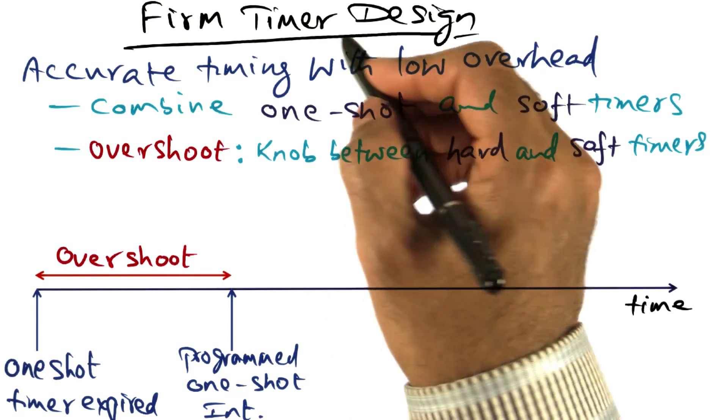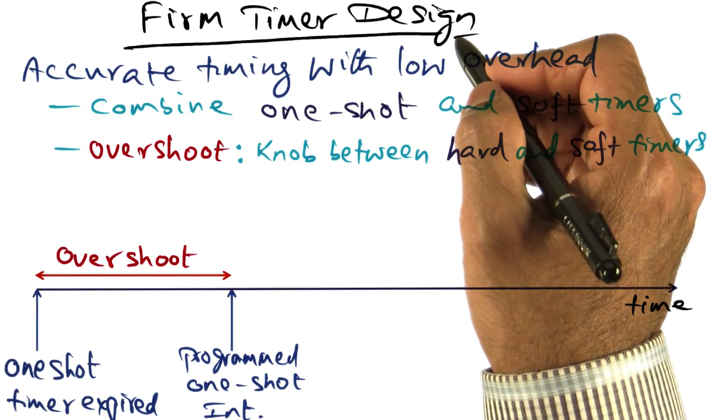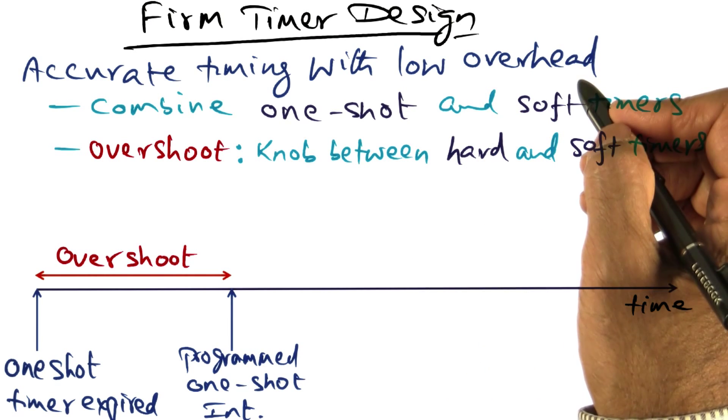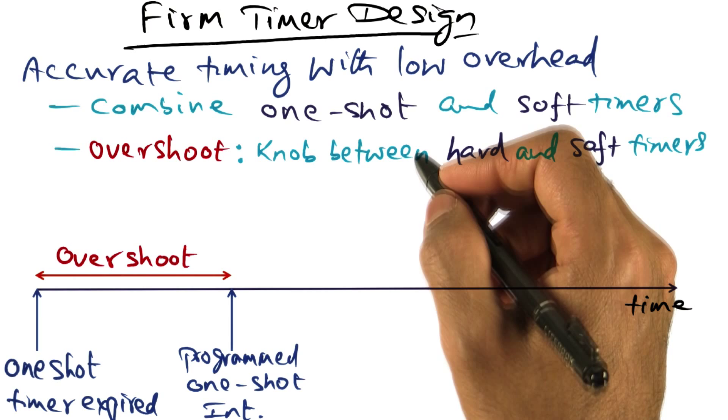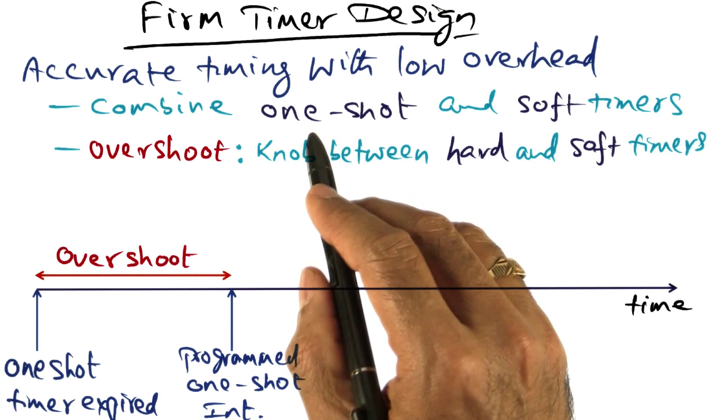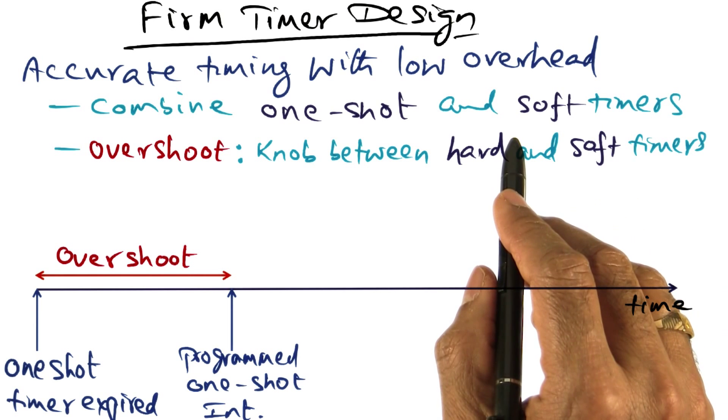The fundamental idea behind the firm timer design is to provide accurate timing with very low overhead. It combines the good points of the one shot timer and the soft timers.